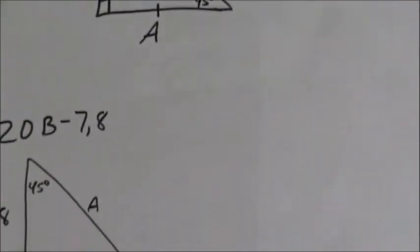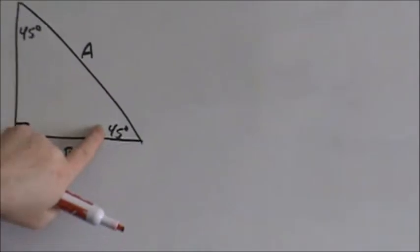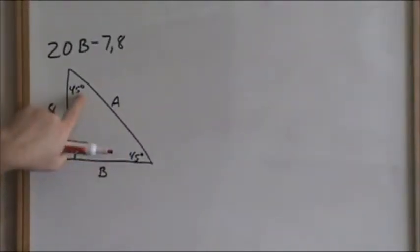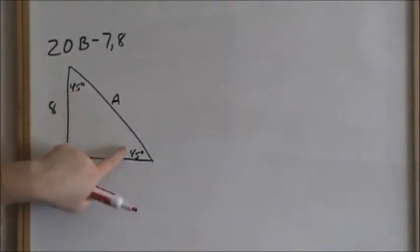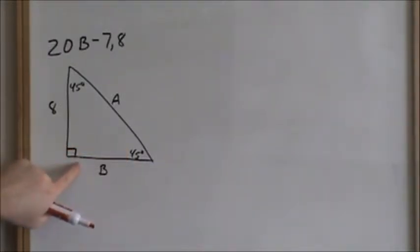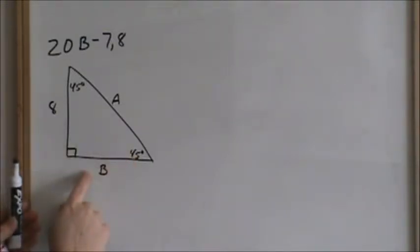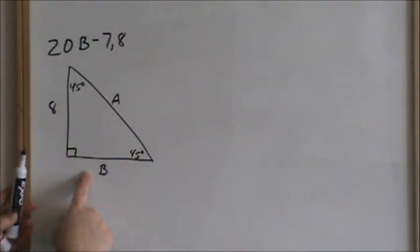We have a 45-45-90 triangle. It's very important that they tell you that these angles are 45 degrees. If these angles are not labeled as 45 degrees, you cannot assume that it's a 45-45-90 triangle, and then you have to use the Pythagorean theorem to solve for the sides. So let's go ahead and use the Pythagorean theorem to solve for the sides.